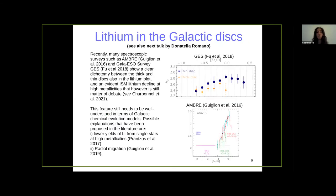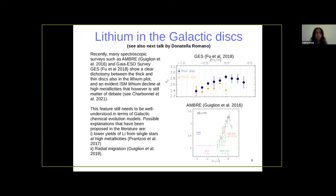After the study of the alpha elements, we applied our models — in particular the parallel model, which enables us to follow separately the evolution of the thick and thin disk — to the study of other chemical elements. I will start with lithium, referring also to talks by Laura Magrini, Donatella Romano, and others. Recently, many spectroscopic surveys such as AMBRE and Gaia-ESO show a clear dichotomy between the thick and thin disk also in the lithium plot, and an evident ISM lithium decline at high metallicities that is still a matter of debate.